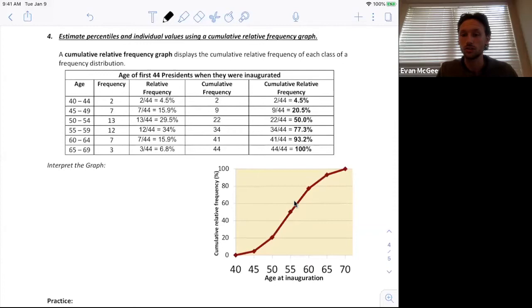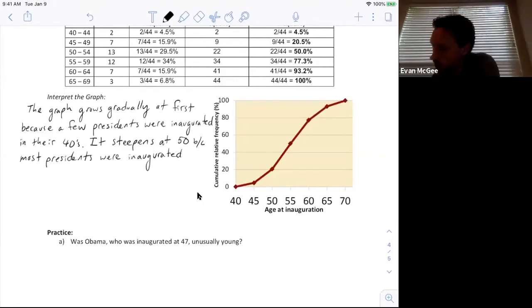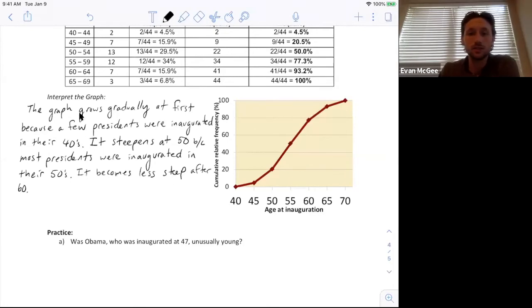When you get past 60, it starts to get less steep again because there were fewer presidents that were at this age when they were inaugurated. So I'll write out my description here. It grows gradually at the start because few presidents were inaugurated in their 40s. It gets steeper at 50 because most of them were at 50 when they were inaugurated or older than 50. And then it tapers off again at the end past 60 because not many people were older than 60 when they were inaugurated.